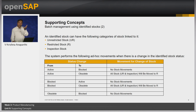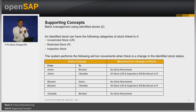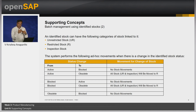The status will have an eventual impact on the inventory as well. For example, if I have a batch which is active and has unrestricted stock associated with it, and I change the batch status from active to obsolete, the corresponding stock will automatically move from unrestricted to restricted. So the status on the identified stock will eventually result in an update on the inventory as well.